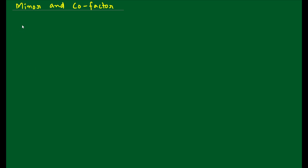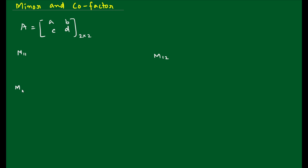So what is minor and co-factor? Let us take an example. We have a 2 by 2 matrix with elements A, B, C, and D — so 4 total elements. Minors are denoted by the capital letter M. We write M11, M12, M21, and M22.